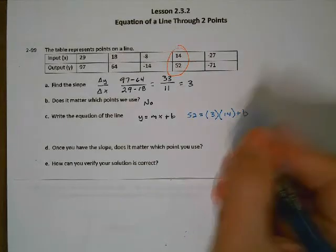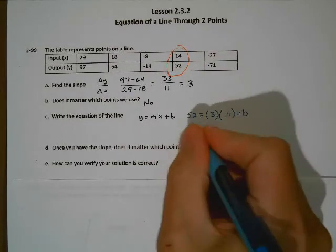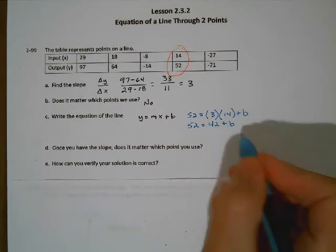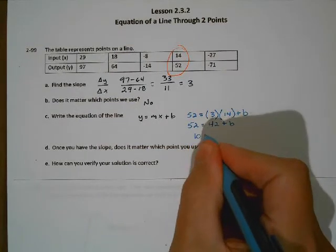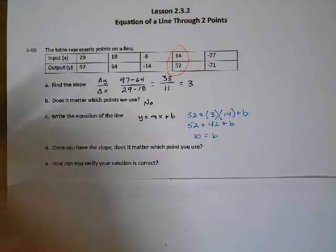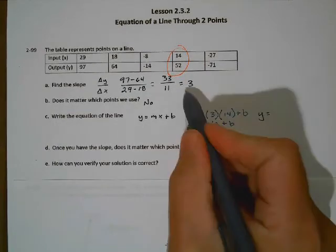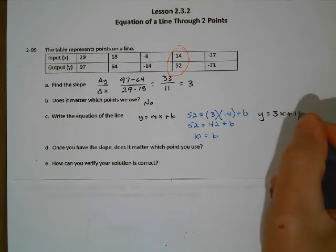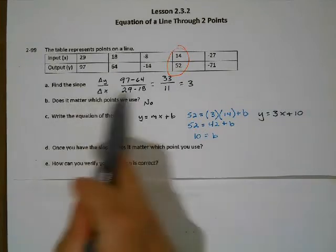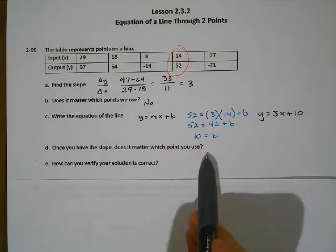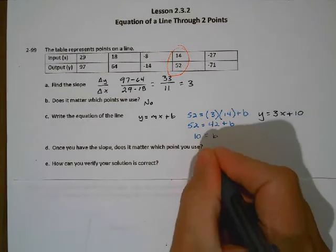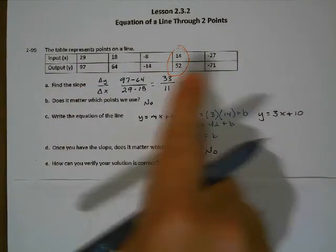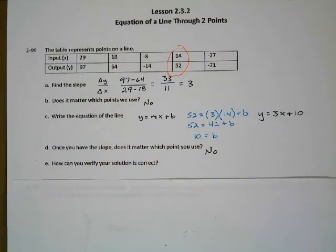Plugging into y equals mx plus b: y is 52, m is 3, x is 14. So 3 times 14 is 42, and we do 52 equals 42 plus b. Subtract 42 from both sides and we get b equals 10. So the equation of our line is y equals 3x plus 10. Once we have the slope, it doesn't matter which point we use — all of these are points on the line, and any one of them would give us y equals 3x plus 10.